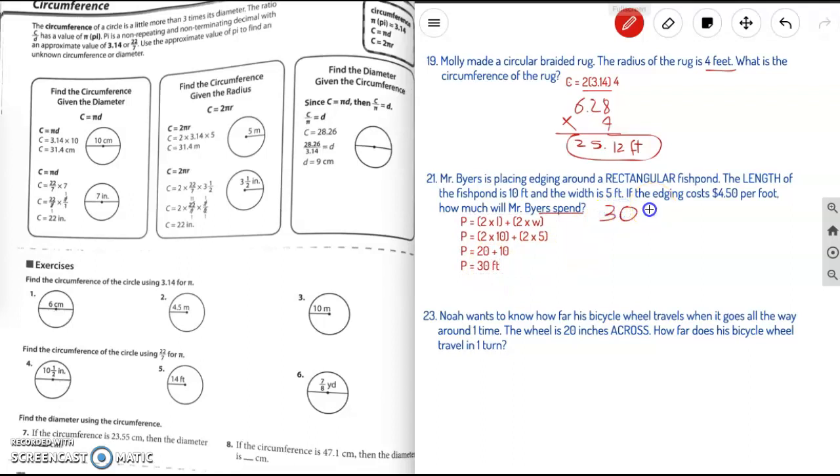Yeah, we're going to do 30 times $4.50. Okay, and that will give us $135. Oops, sorry about that. $135. Okay.